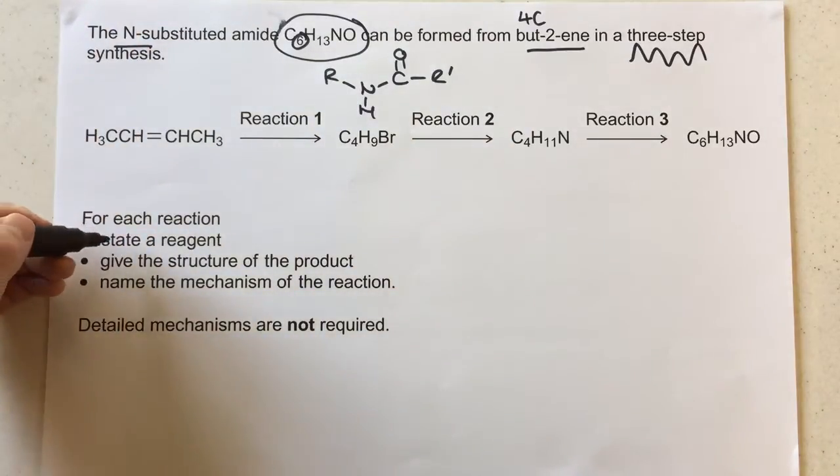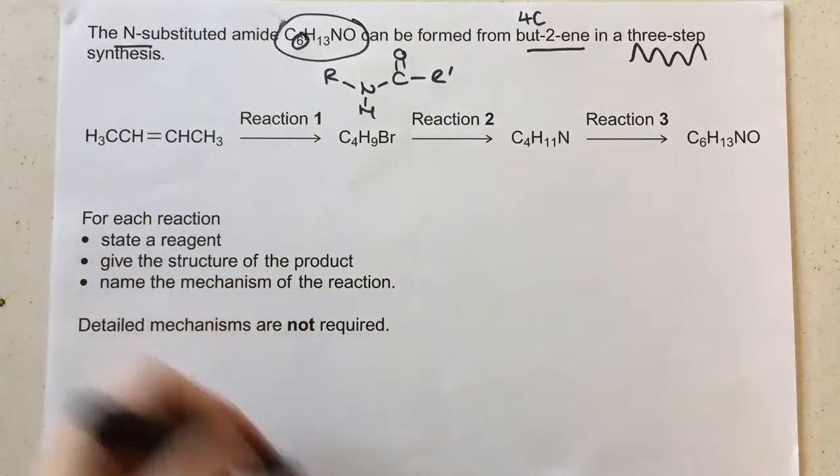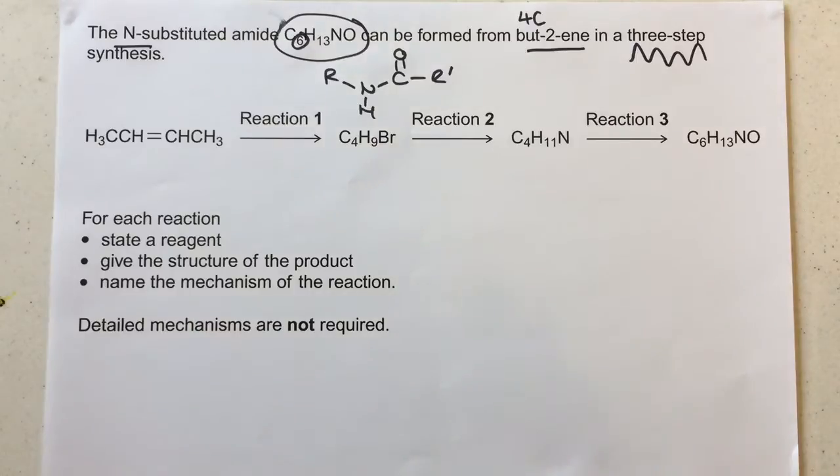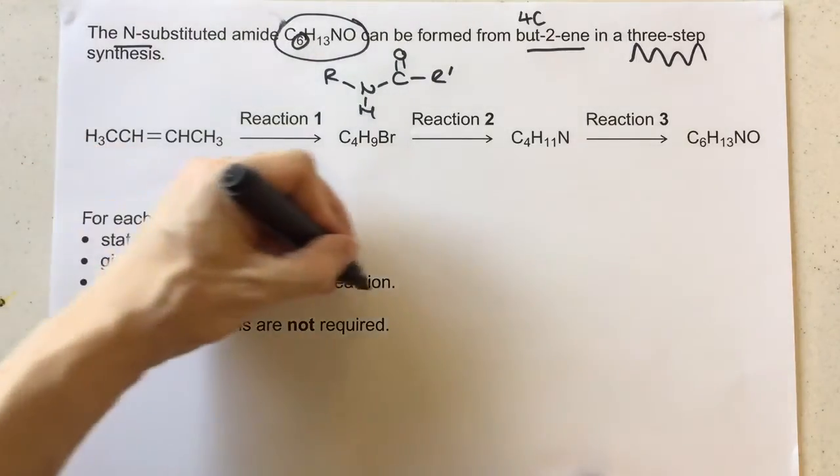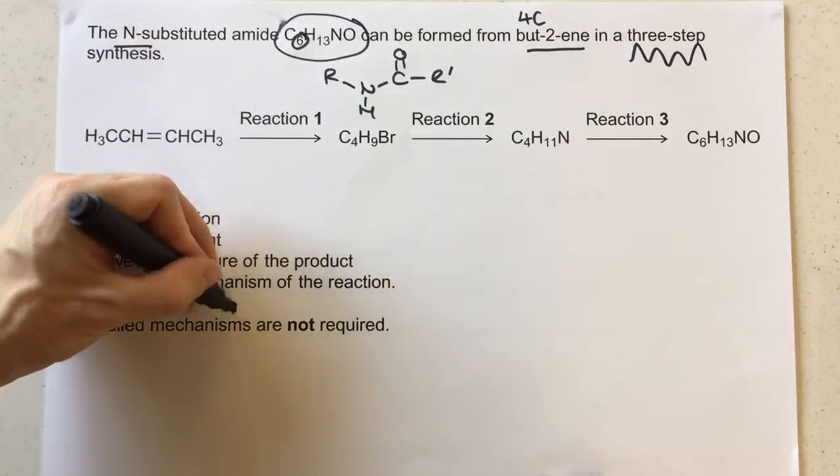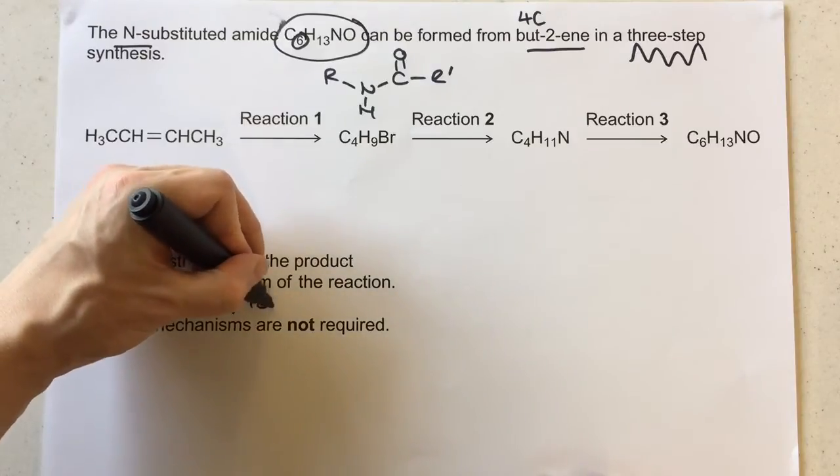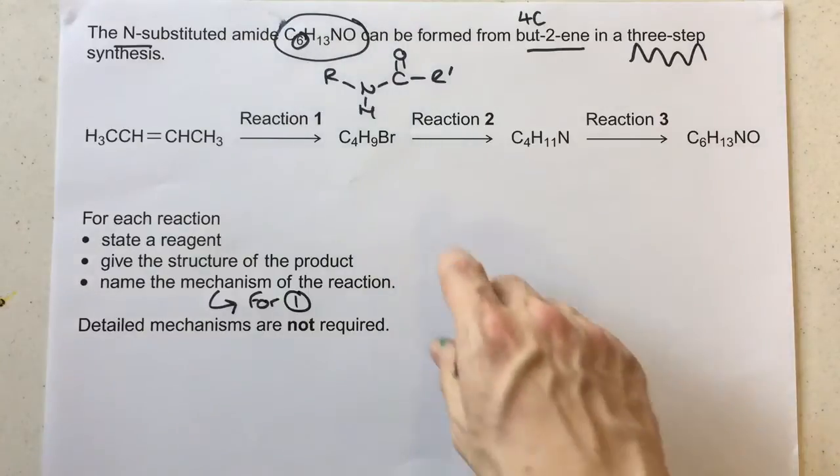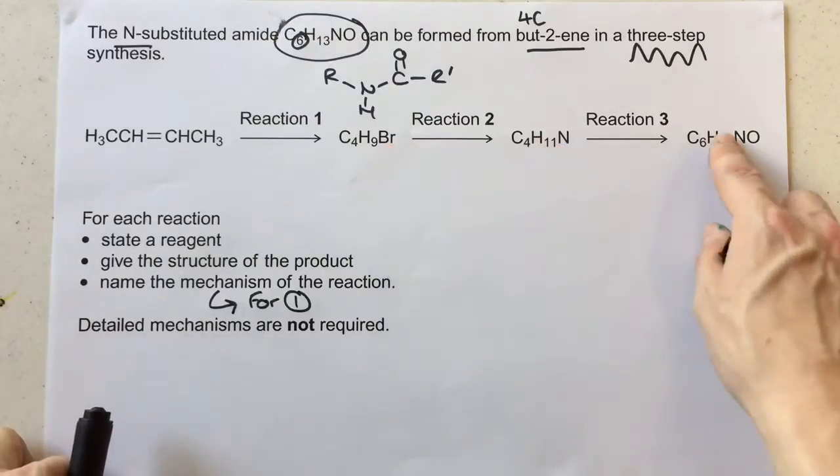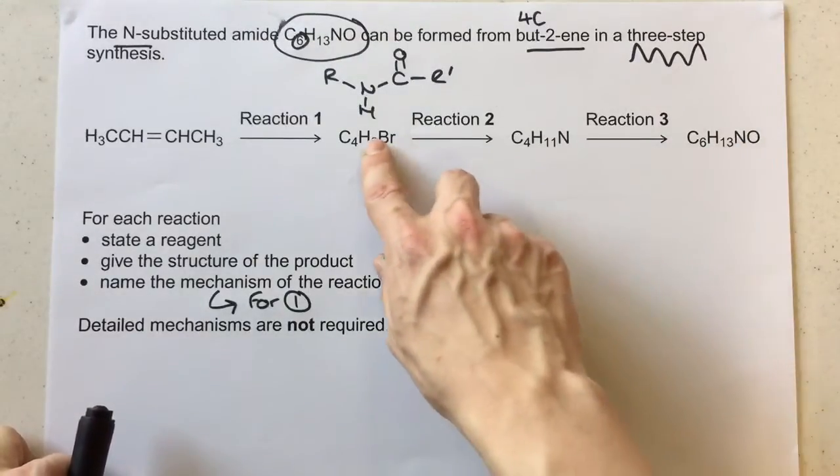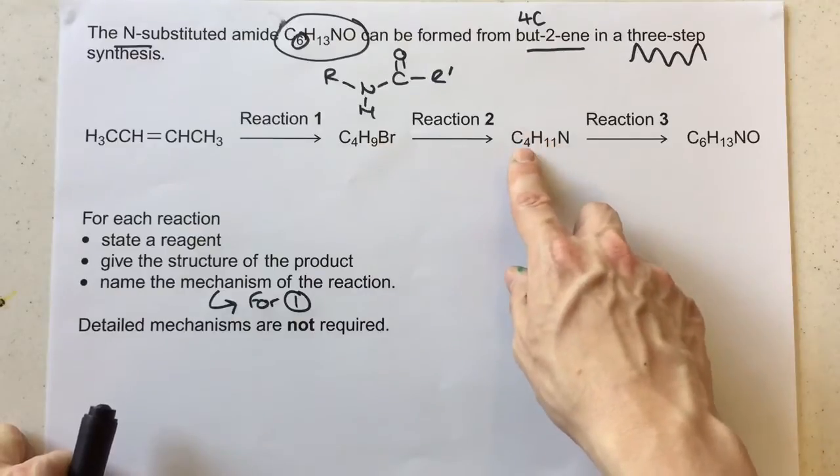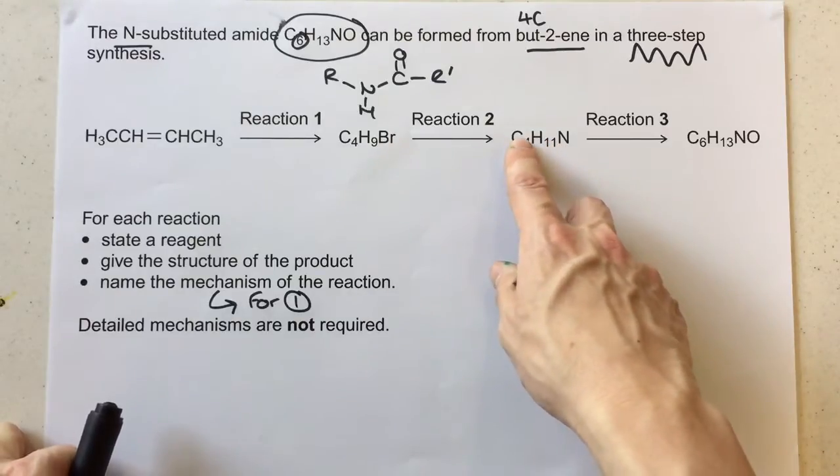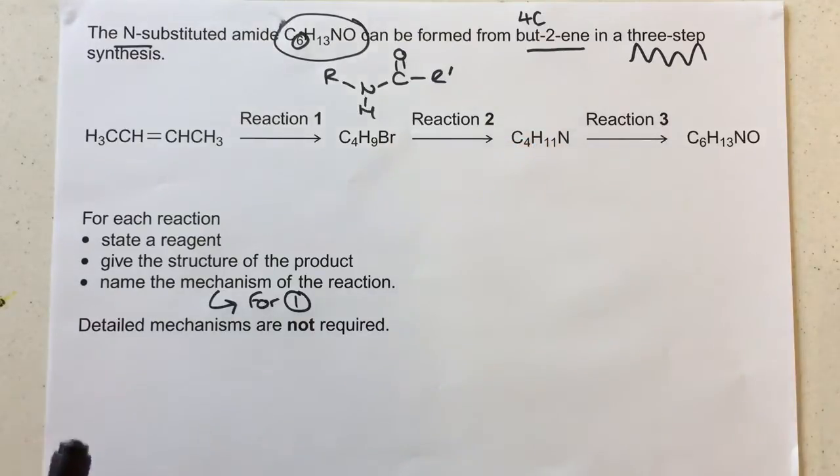For each reaction, it wants you here to state a reagent, give the structure of the product, and name the mechanism for the reaction. Now this is from an AQA paper, so here when it says name the mechanism for the reaction, OCR, you're only expected to do it for reaction number one from the ones that we've got just here. You don't need to know the mechanisms that are involved for reactions two or three, mainly because we don't use the mechanism that is used in two here in this context for the OCR A-level, and the mechanism for number three is not on the A-level at all for OCR A.